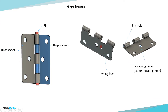This is hinge bracket 1 with its important functional features. The resting face is the back side surface that will rest on the panel and be fastened through three holes — three fastening holes. For this tolerancing scheme, we will set the center hole as the locating hole, which will be slightly smaller than the other two. There is also a pin hole that goes through the bent portions, through which the pin will be inserted.